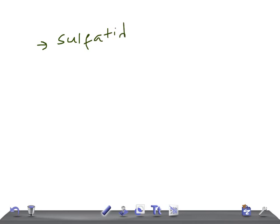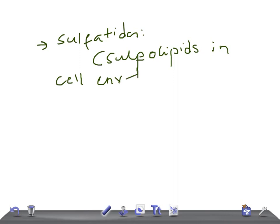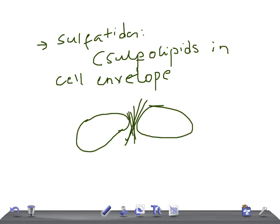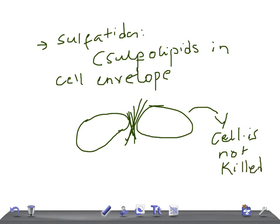Sulfatides are sulfolipids found in the cell envelope of Mycobacterium. Sulfatides inhibit phagosome-lysosome fusion. Once this phagosome-lysosome fusion is inhibited, the bacterium is ultimately not killed inside the cell — the bacteria survives.